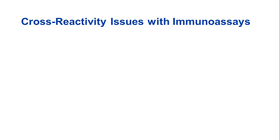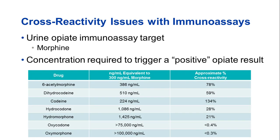Cross-reactivity with immunoassays is a big issue that needs to be considered when interpreting screening test results. For example, in the urine opiate immunoassay, the antibody used in most manufactured kits is directed against morphine, and has limited to no cross-reactivity with all of the other opioids used in pain management. A standard urine opiate immunoassay has pretty good cross-reactivity with codeine and the metabolite of heroin, 6-acetylmorphine. However, a patient's urine sample would need a much higher concentration — higher than the 300 ng/mL cutoff — of oxycodone and/or oxymorphone to get a positive result. Other opioids like methadone, tramadol, fentanyl, or tapentadol are absent from this list since they do not cross-react at all with this assay, and you will get a negative result even if these drugs are present in the patient's urine.